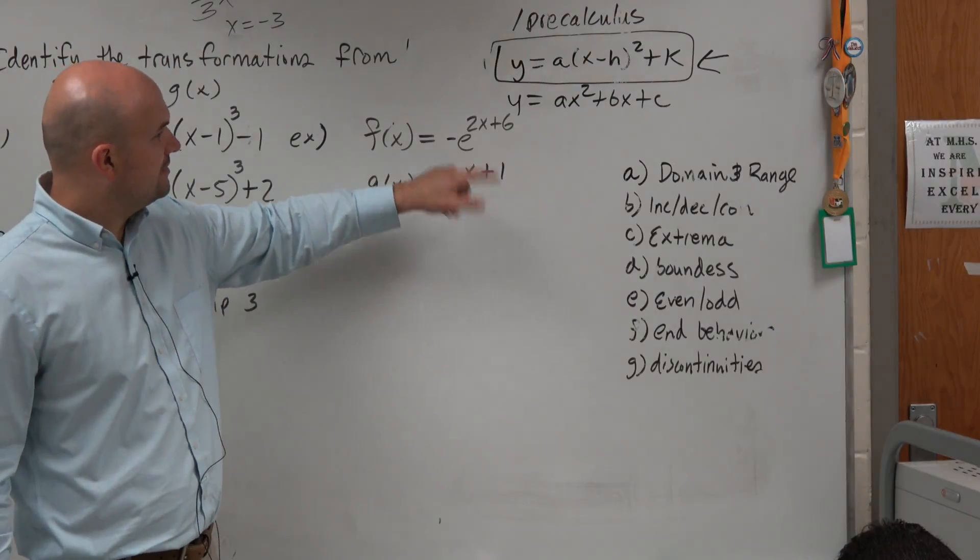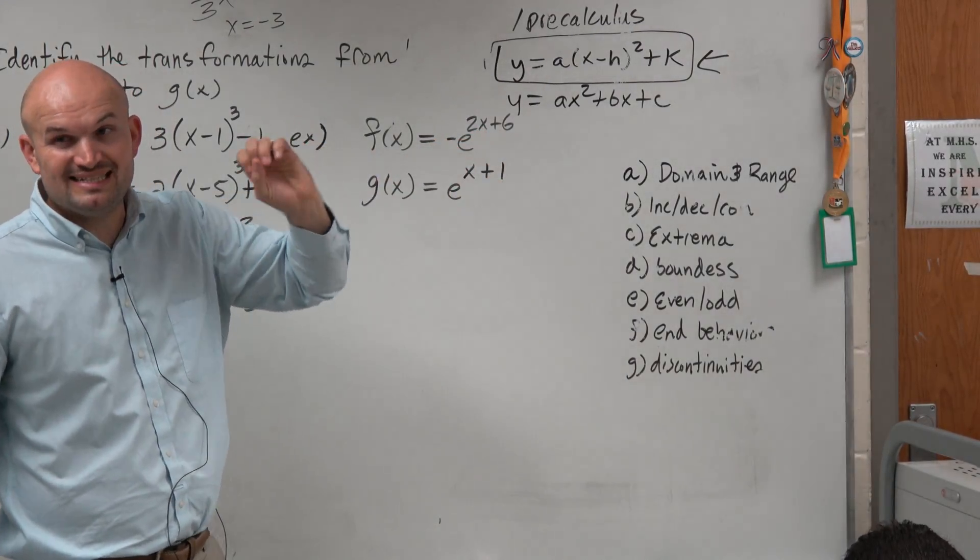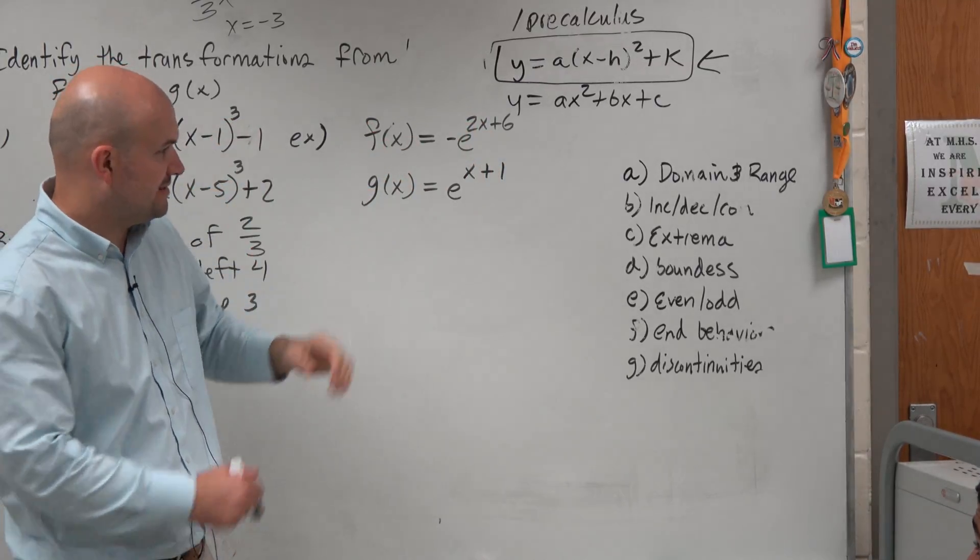So before I get to this example, would you guys agree that I should probably rewrite this in terms of b times (x minus h), like in that format? It's usually going to be a preferred method.